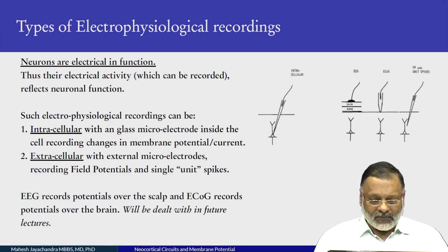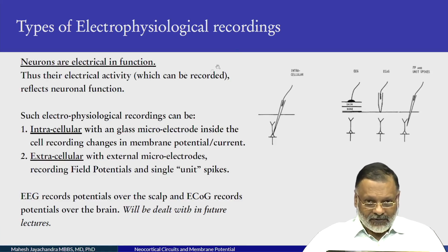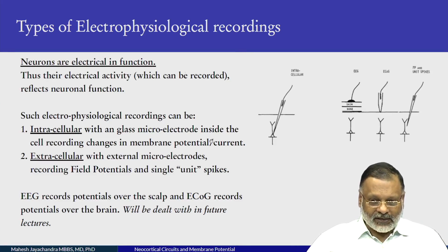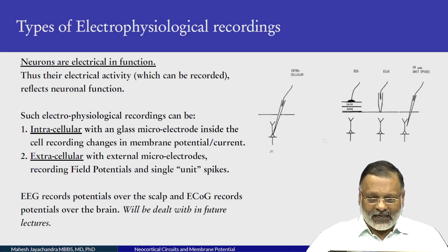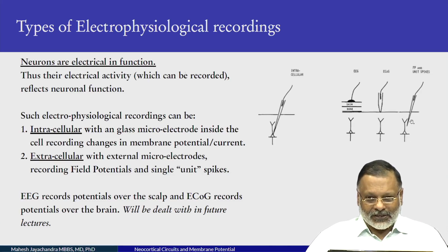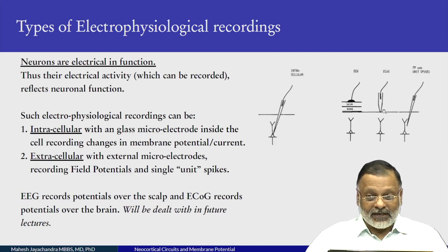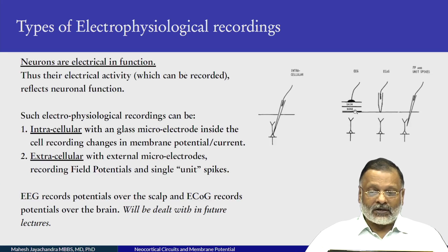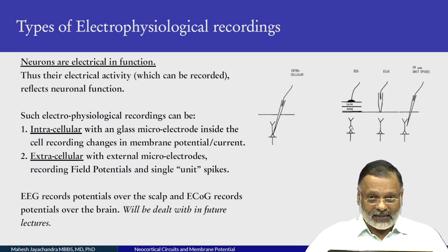You have intracellular recordings where you have a glass micro electrode inside the cell recording changes in membrane potential or current. And then you have extracellular recordings where the electrode is outside the cell. And there you get the extracellular activity of the cell, called units or spikes. This can be really close to the cell, it can be on the surface of the brain — an electrocorticogram — or it can be an EEG, electroencephalogram, where you record from the scalp, the skin, the bone, and through all that you sense the electrical activity.